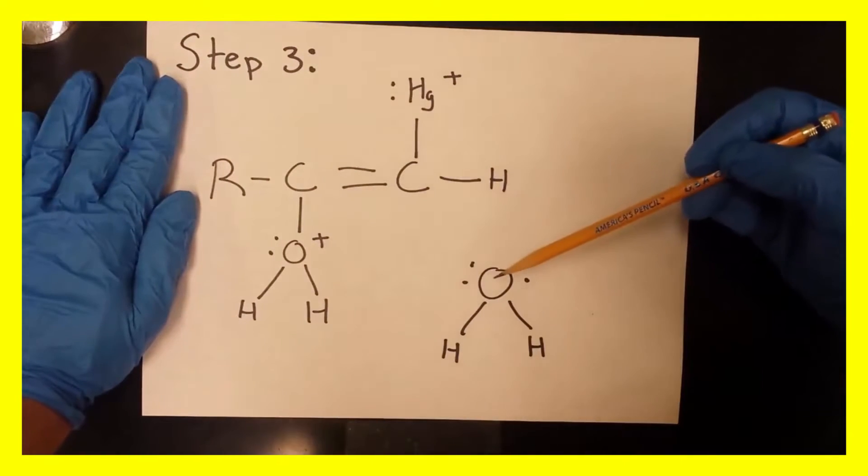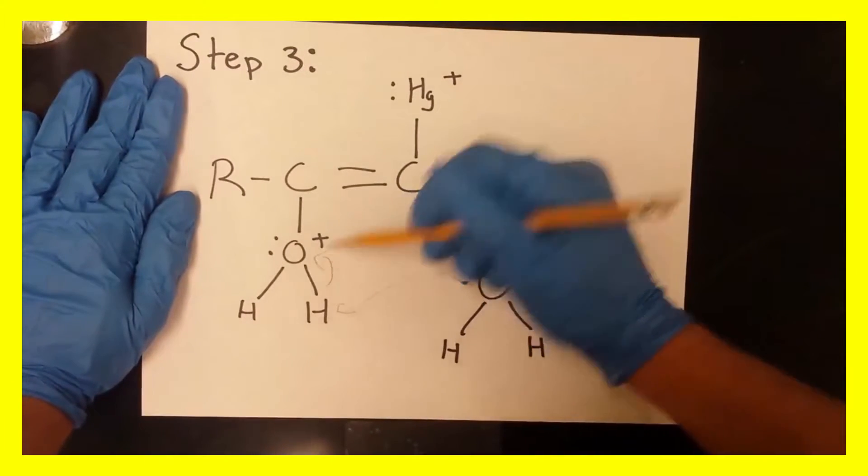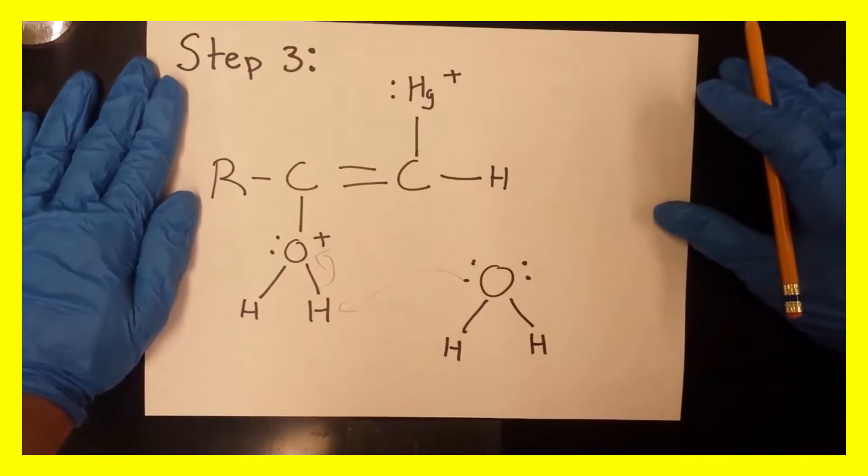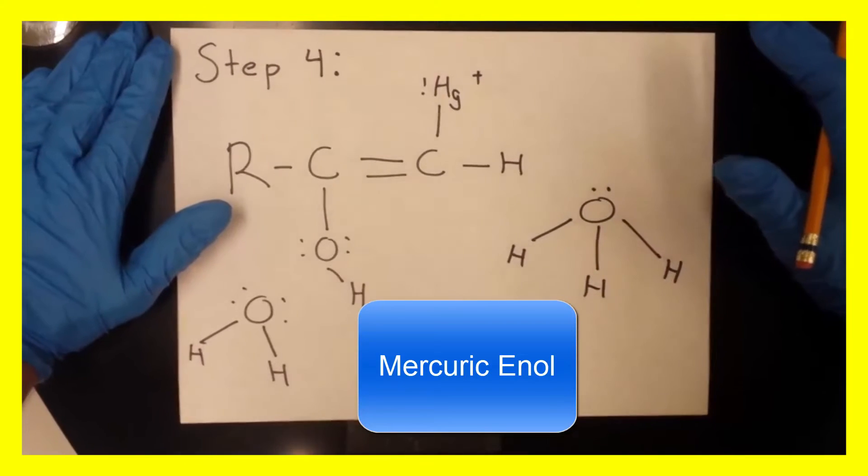So in order to do that, we're going to have our water molecule come in, and it's going to take this hydrogen, bouncing the lone pair back up to that oxygen, forming a mercury enol.